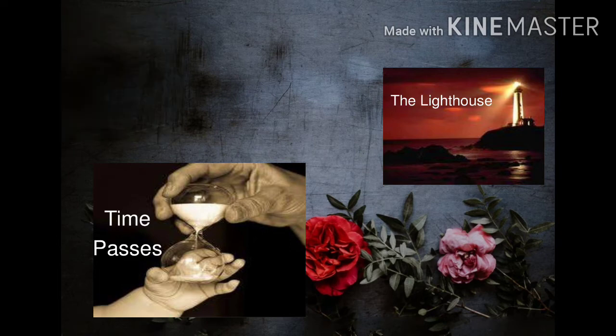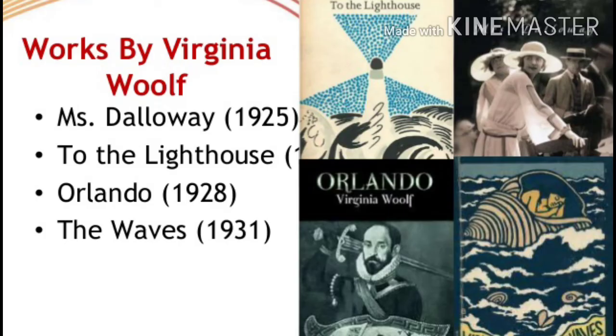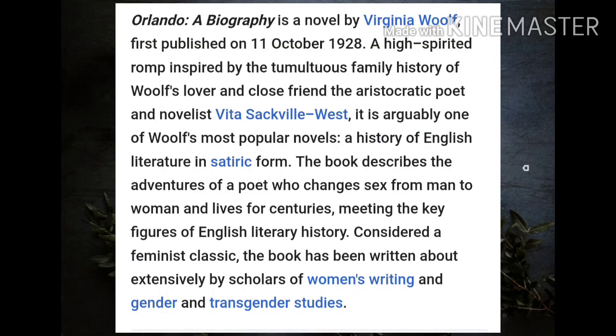Let us talk about another biographical novel, Orlando. Orlando, a biography published in 1928, is one of Virginia Woolf's lightest novels — a parodic biography of a young nobleman who lives for three centuries without aging much past 30, but who abruptly turns into a woman. The book is in part a portrait of Woolf's lover, Vita Sackville-West.